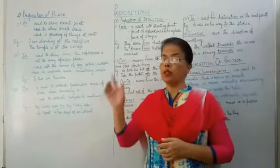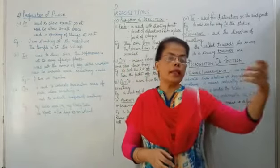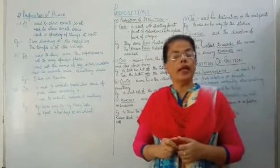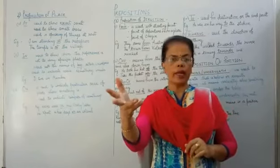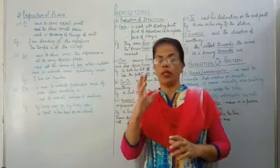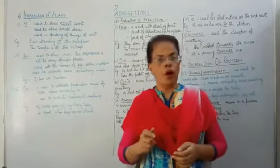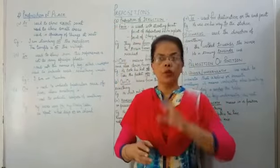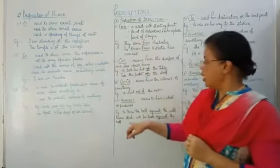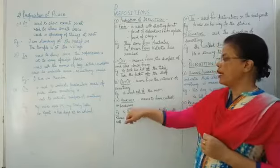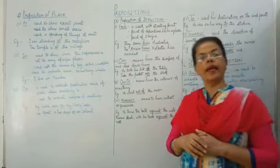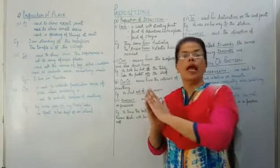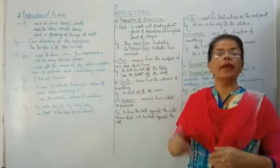Now, 'against' — please don't get confused, it has other usages too. But right now I am dealing with 'against' relating to direction. 'Against' indicates two things: first, contact — coming into contact with something, and end with a pressure. Example: He threw the ball against the wall — pressure was applied. The ball came into contact with the wall. Second example: Raman stood with his back against the wall — creating pressure while in contact with the wall.